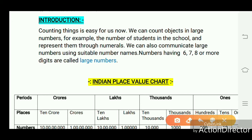First, we start counting things — it is easy for us. We can count objects in large numbers, for example the number of students in the school, and represent them through numerals. We can also communicate large numbers using suitable number names. Numbers having 6, 7, 8 or more digits are called large numbers.